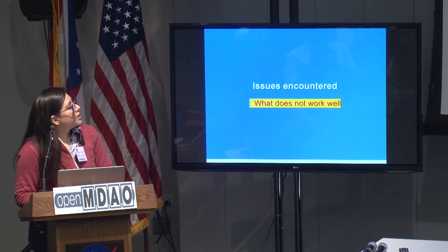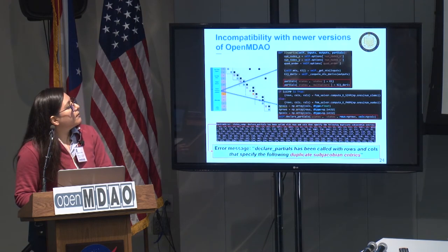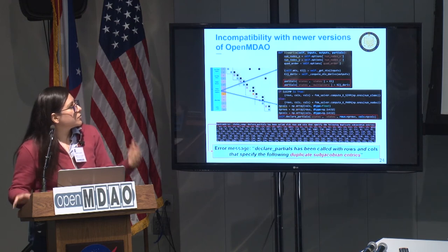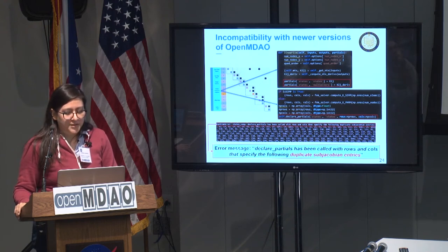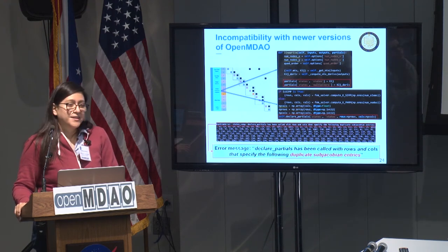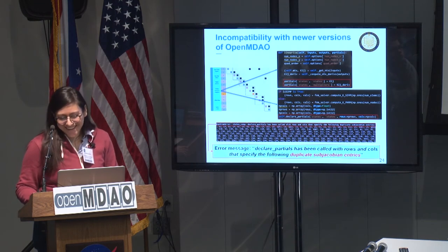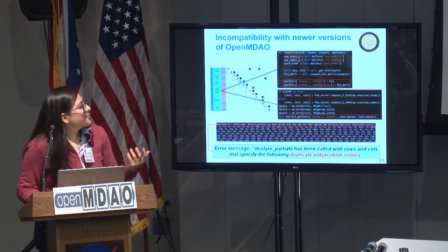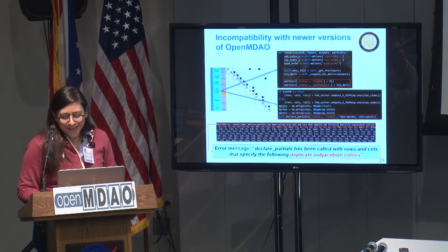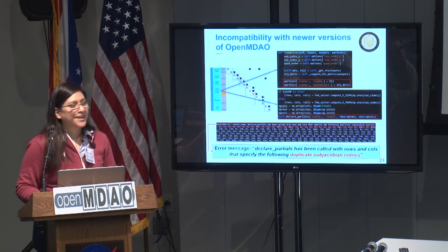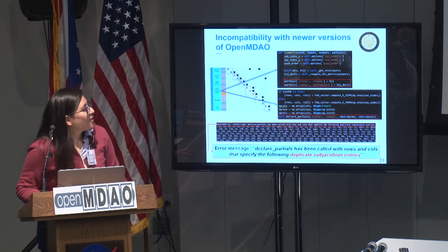In terms of the issues we encountered - what did not work well? One of the main issues we're still dealing with today is the newer versions of OpenMDAO. Once upon a time, this worked fine, and then there was an update and it didn't work fine anymore. Something goes on with the declare_partials and it's just angry. We haven't quite figured out why. It works up to version 2.5, and after that it's very angry. If we could all look into that, that would be great.